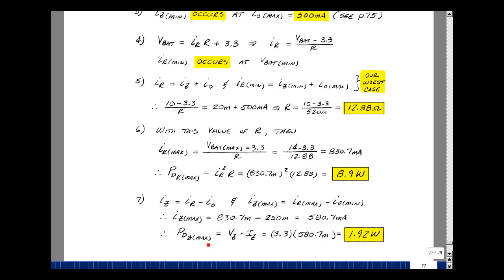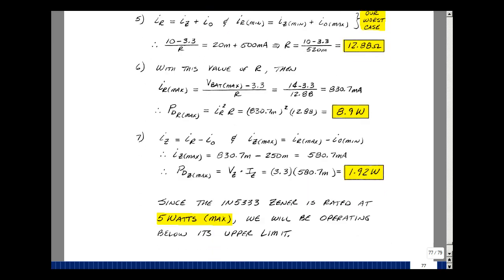For a Zener diode, there's no I squared R because it's just a voltage source, so it's going to be the voltage times the current. 3.3 volts and the biggest current I would get would give me 1.92 watts. I did pick a 5 watt Zener, so I'm definitely below that limit.